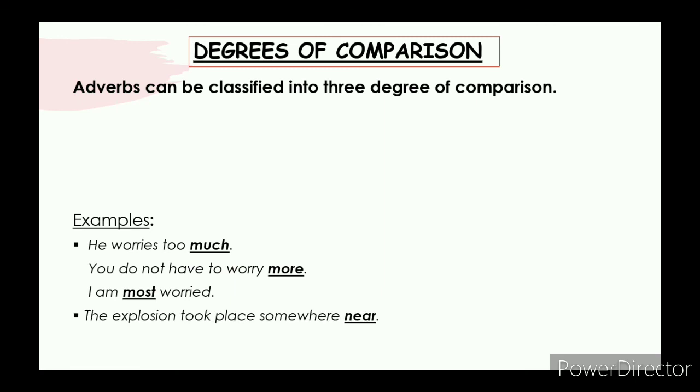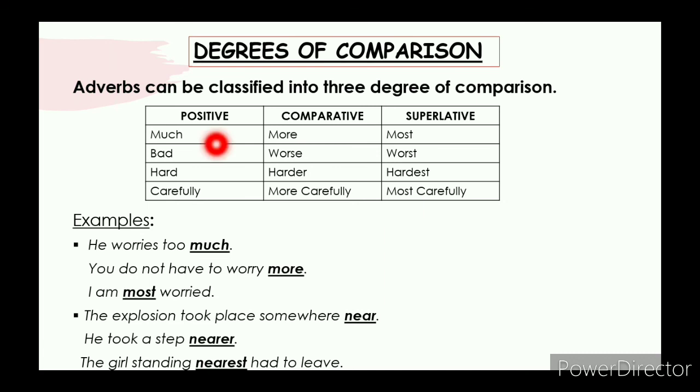Then the explosion took place somewhere near. He took a step nearer. And the girl standing nearest had to leave. So near, nearer, and nearest are three degrees of comparisons. Now here is our table I was talking about. Like we had read a table in adjectives. Positive, comparative, and superlative. Much, more, most. Bad, worse, worst. Hard, harder, hardest. Careful, carefully, more carefully, most carefully. So in this way adverbs also have three degrees of comparisons. I hope you got it.